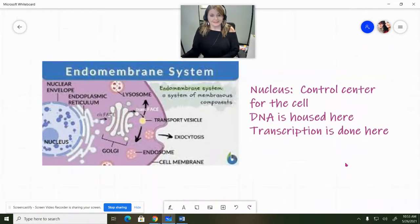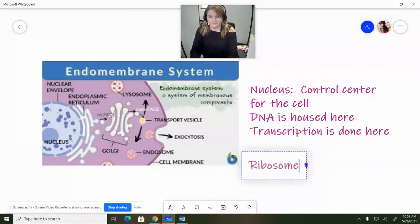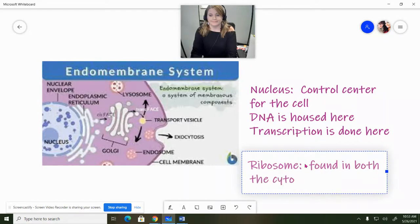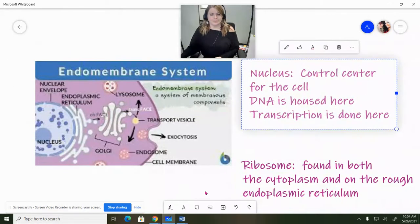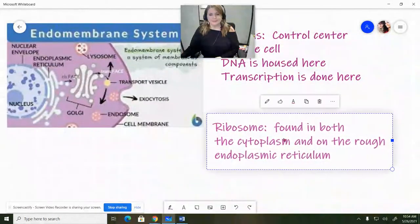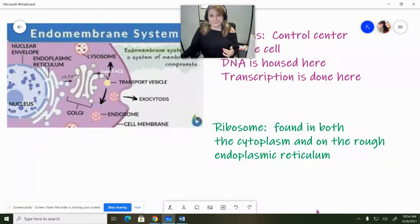That brings us to our next organelle, which is the ribosome. So the ribosome is found in the cytoplasm and on the rough endoplasmic reticulum. So remember if I should say remember here, but sometimes we call the rough endoplasmic reticulum, just the rough ER. So we don't have to say endoplasmic reticulum, although it does force us to kind of slow down our pace of speech, which isn't necessarily a bad thing.